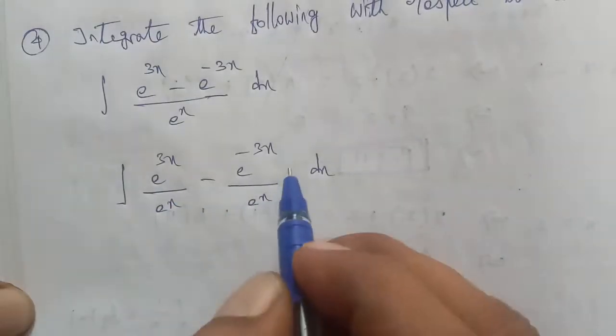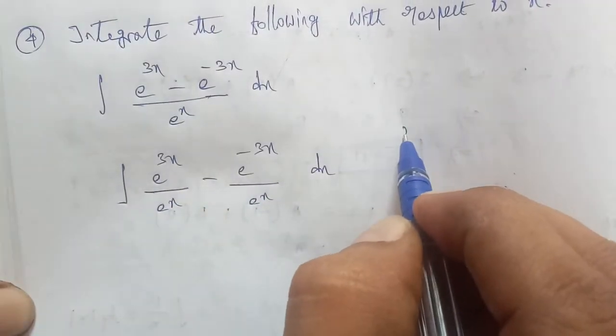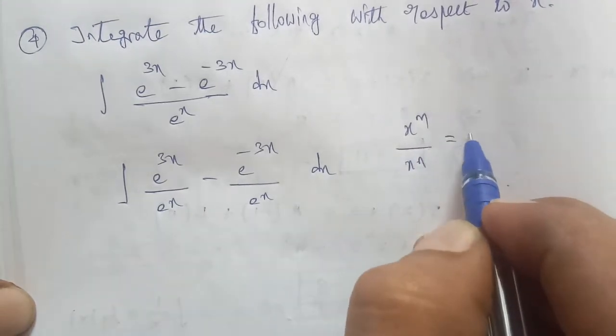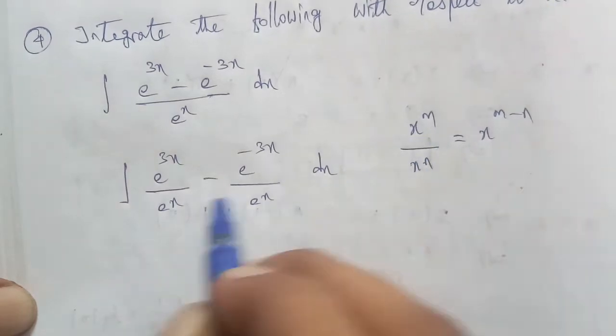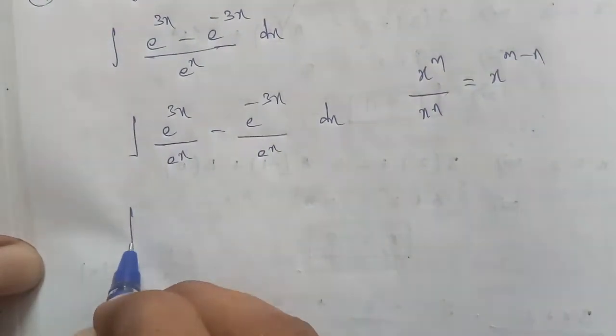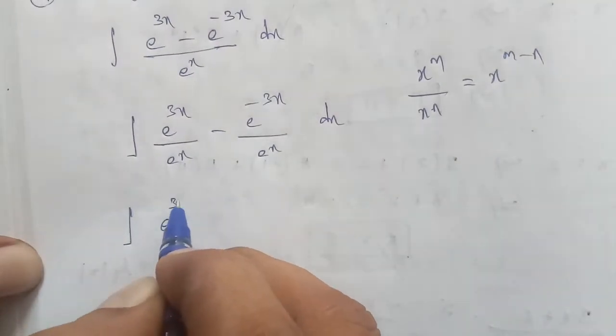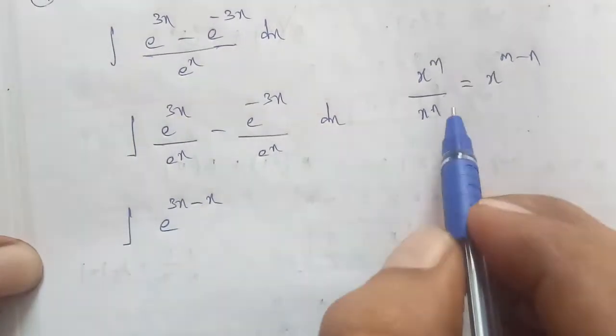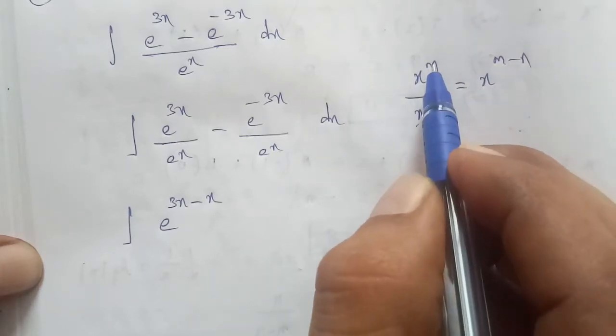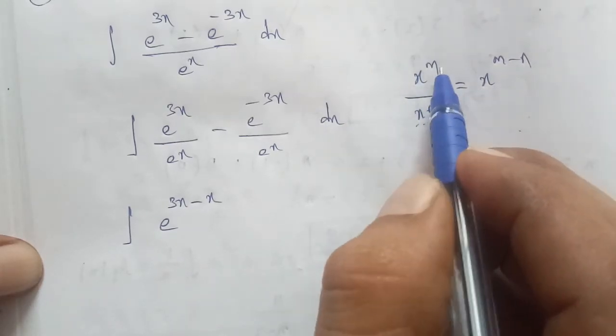Next, we know the formula: x^m / x^n = x^(m-n). Using this formula, for e^(3x) / e^x, the common base is e and the exponent becomes m minus n.